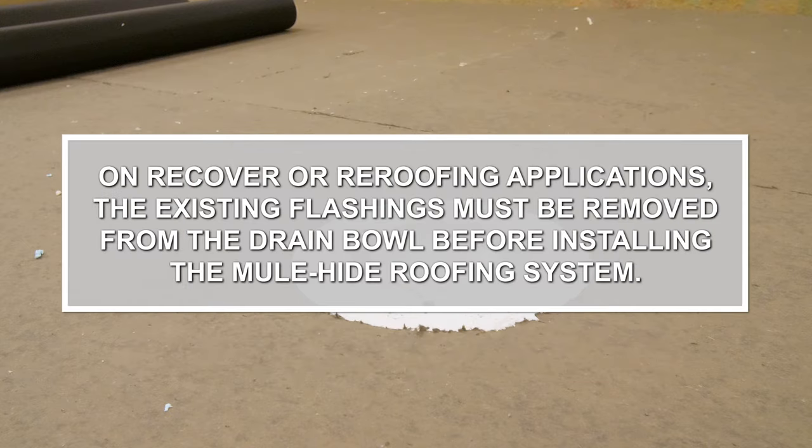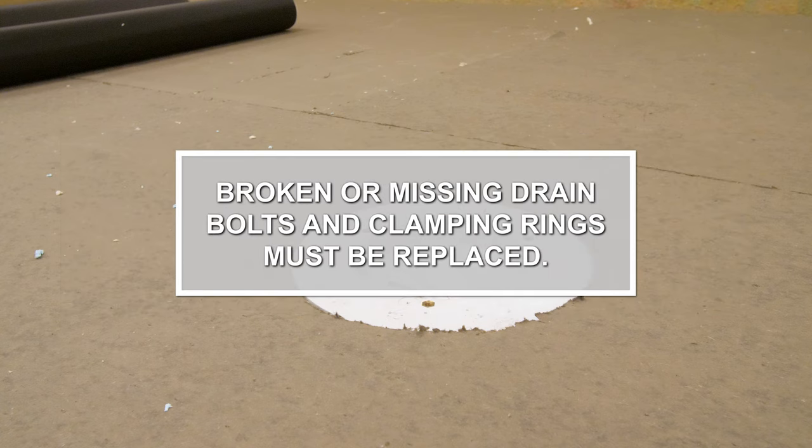On re-cover or re-roofing applications, the existing flashings must be removed from the drain bowl before installing the mule hide roofing system. Broken or missing drain bolts and clamping rings must be replaced.